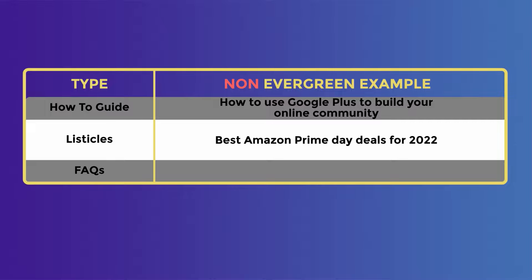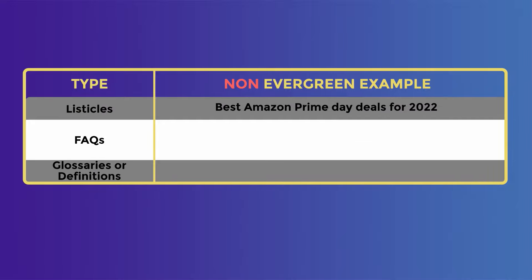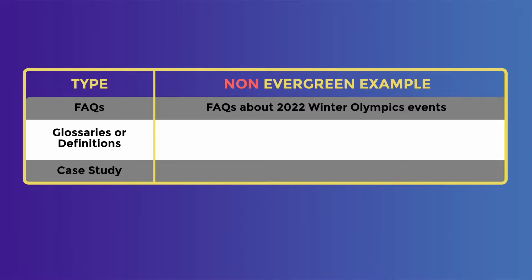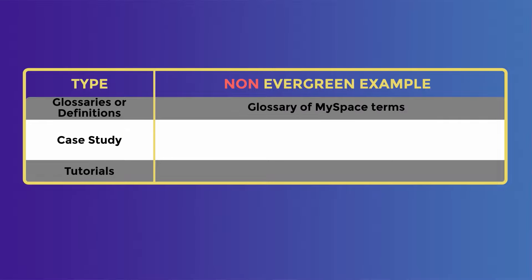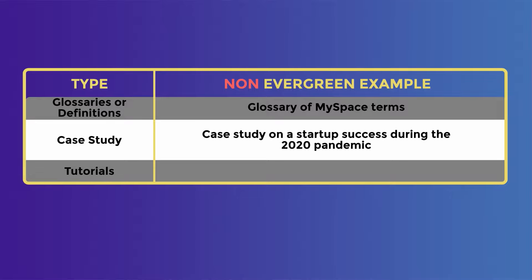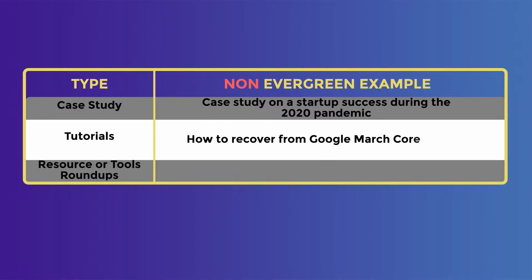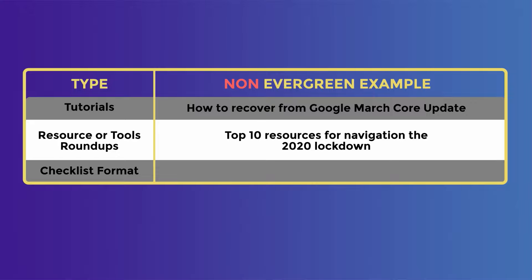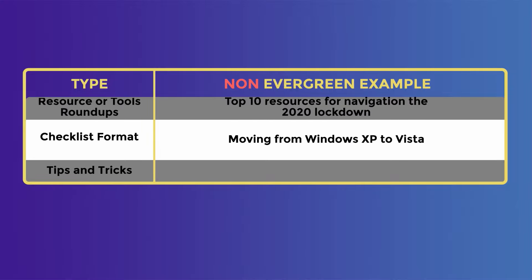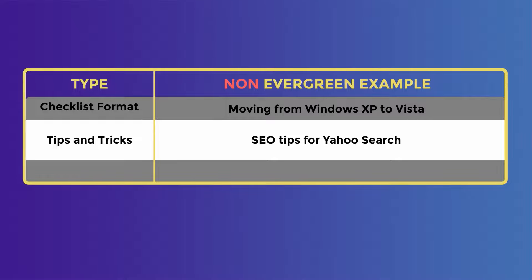Every year, you will need to have a complete overhaul of the content to stay relevant. Non-evergreen topics for FAQs could be FAQs about 2022 Winter Olympic events. An entire glossary will become obsolete when a platform or product goes out of style, like glossary of MySpace terms. Case studies with specific years or events are not evergreen as well, such as a case study on startup success during the 2020 pandemic. How to recover from Google core updates for tutorials — because the content serves a specific purpose. Top 10 resources for navigating the 2020 lockdown. Checklist for moving from Windows XP to Vista. SEO tips for Yahoo Search — this may seem like an evergreen topic back in 2005, but not anymore.